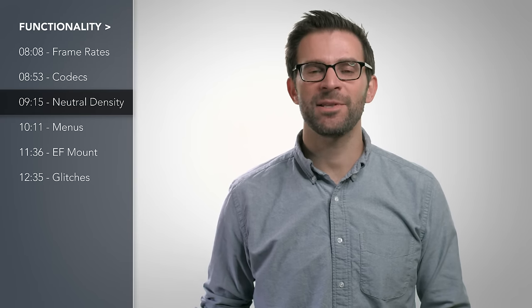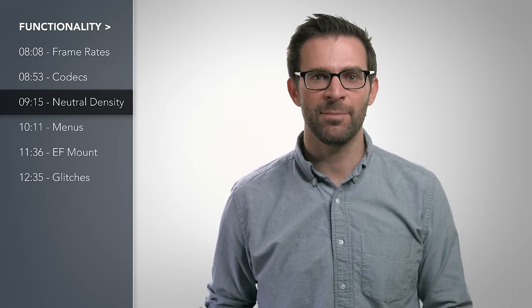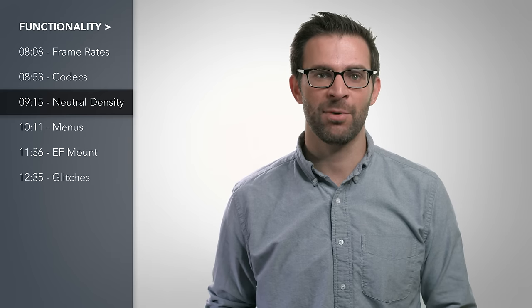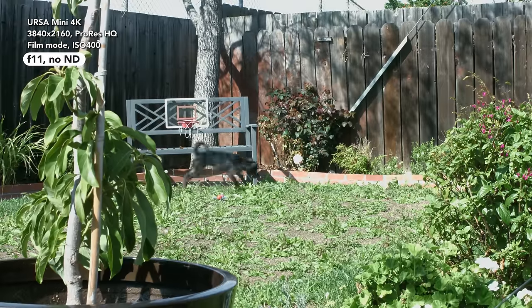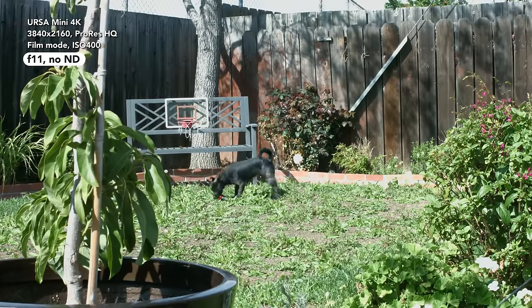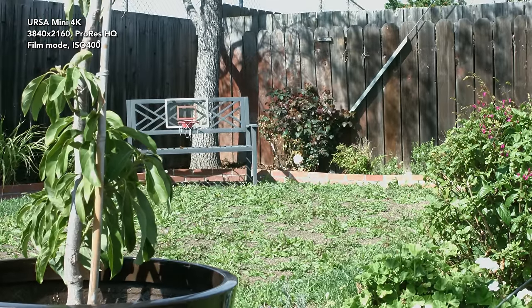All right, the next thing, ND filters. This has been discussed by everyone online already, but it's one of the biggest shortcomings of this camera. There are no built-in ND filters. For those who don't know, neutral density, or ND, whether built into the camera as a glass filter that screws onto the end of a lens or in plastic sheets taped to a window, reduces the intensity of light entering the camera.